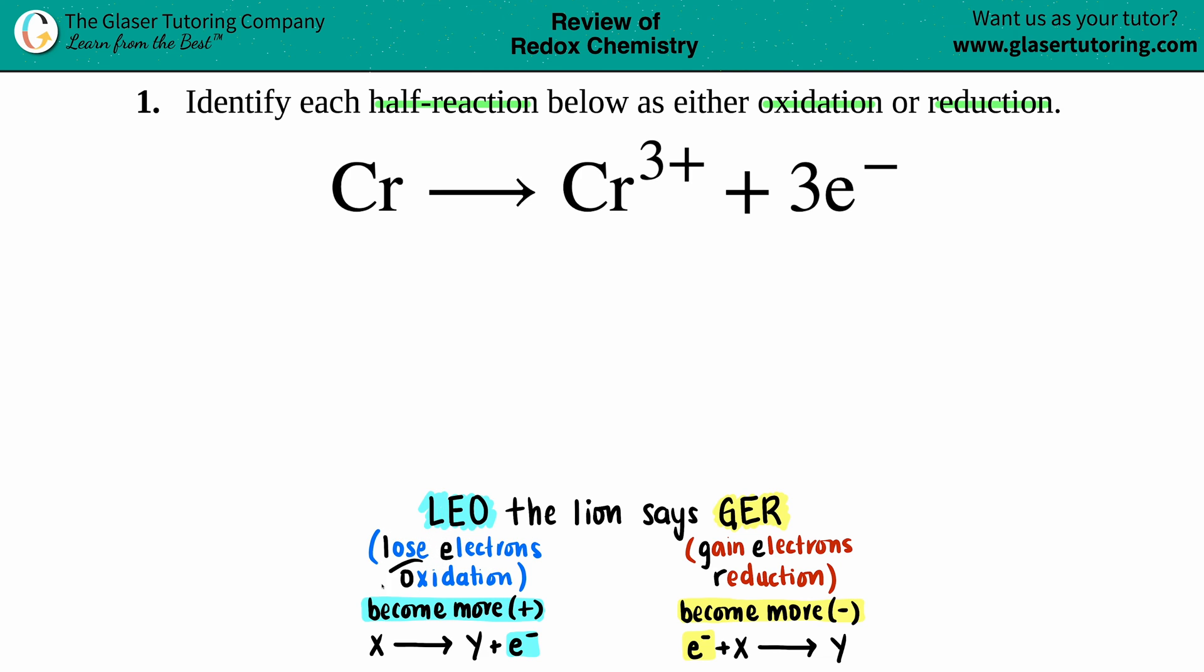LEO stands for lose electrons. Anytime that something loses electrons, that's oxidation. So lose electrons = oxidation. On the flip side, if you gain electrons, that's reduction. So it's this idea whether you're losing the electrons or gaining them.